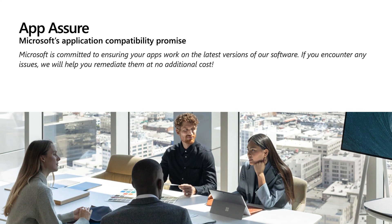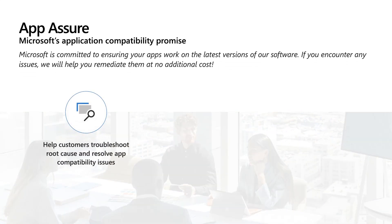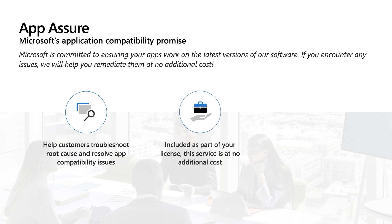We launched App Assure two years ago with the promise that we would help customers fix apps that didn't work after upgrading to Windows 10 or Office Pro Plus, because Microsoft is committed to making sure all of your business-critical apps work. Since then, we've evaluated nearly 700,000 applications and discovered that less than a quarter of a percent of them have had issues, because Windows 10 and Microsoft 365 apps were built with application compatibility in mind. For that small percentage of apps that do have issues, our dedicated team of App Compat experts — including App Assure managers and product engineers — will guide you through the remediation process. App Assure is included as part of your eligible subscription at no additional cost.